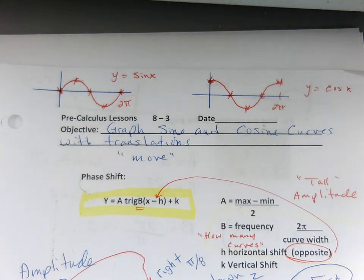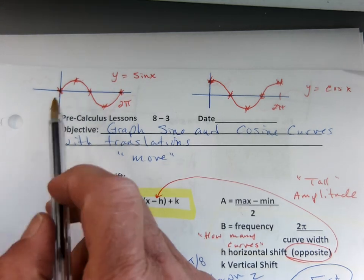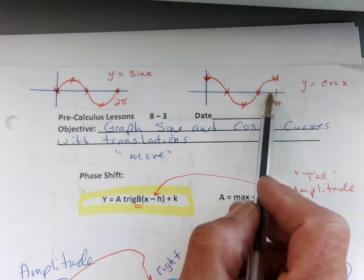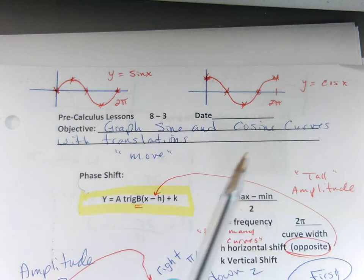Okay everybody, let's wrap up the lesson. So today we are really talking about doing a shift or moving our graph. So yesterday we talked about graphing a sine and a cosine curve, and then what we're going to do today is actually move them.